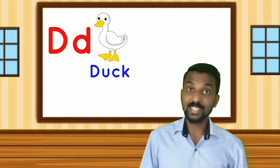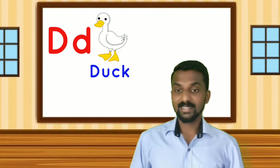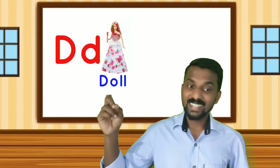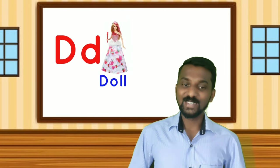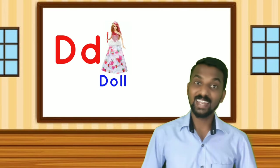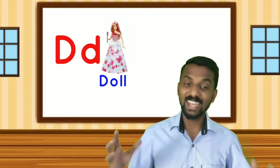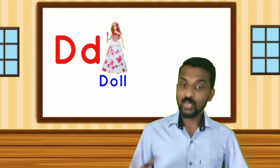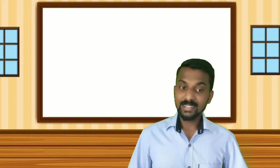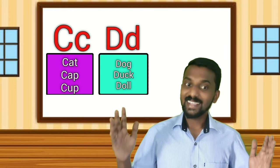Then what is this? This is a duck. This is a duck. D-U-C-K Duck. D-U-C-K Duck. Okay, then what is this? Yes, this is a doll. This is a doll. D-O-L-L Doll. D-O-L-L Doll. So today we learned C-A-T Cat.